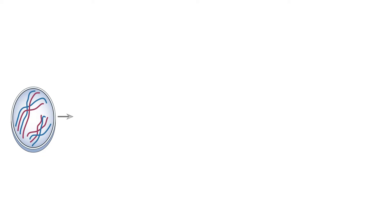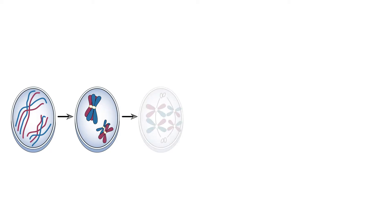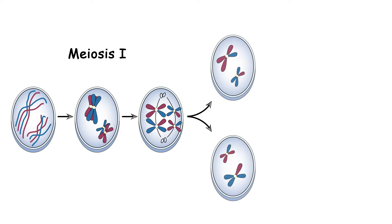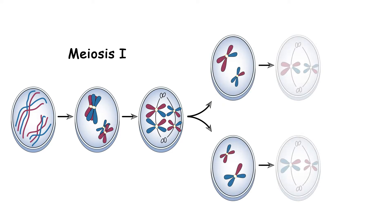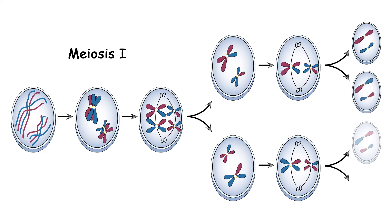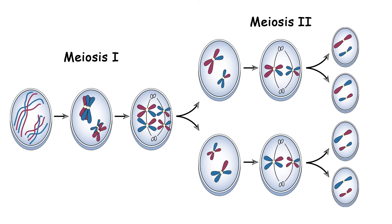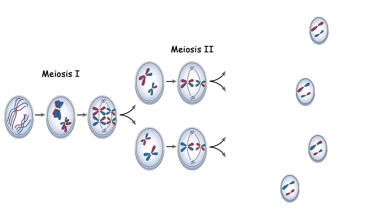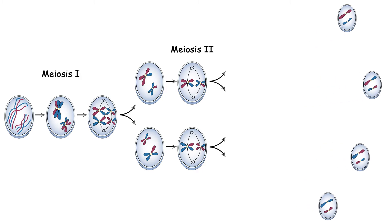It achieves this through meiosis. Meiosis is the process where a cell produces four daughter cells through two rounds of cell division. At first, the diploid cell divides once, producing two diploid daughter cells. This is followed by another round of division resulting in four haploid daughter cells. These new haploid cells are released into the environment and the cycle begins anew.